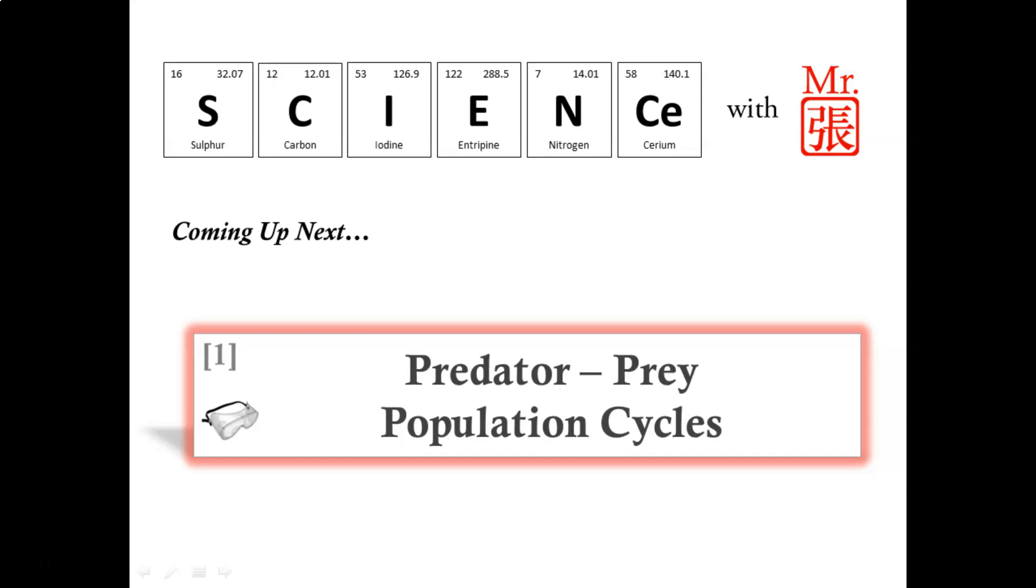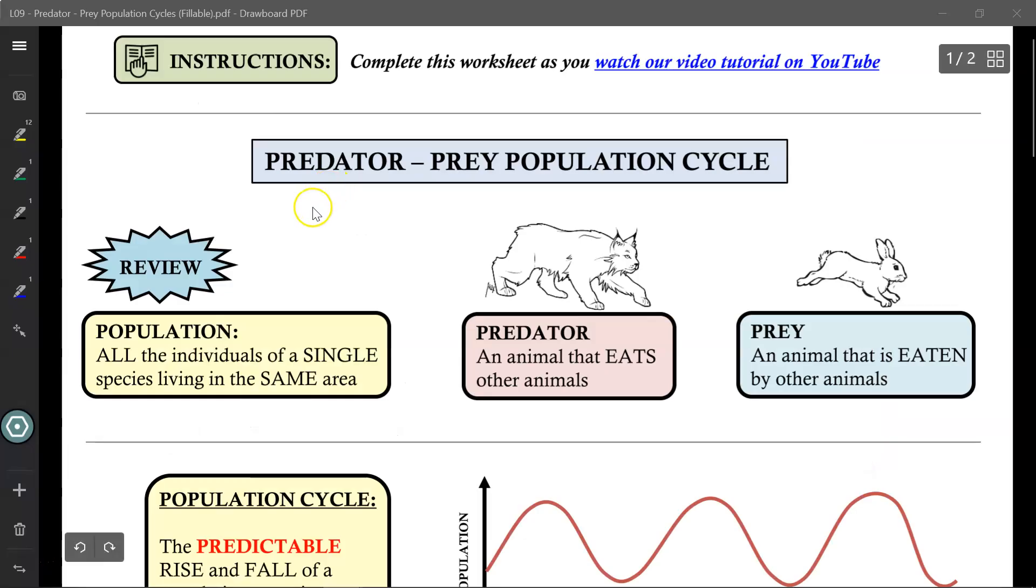In this video tutorial, we will be looking at predator-prey population cycles. If you recall, population is defined as all the individuals of a single species living in the same area.